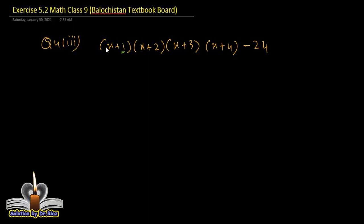مثلاً یہاں پر 1 ہے — اگر ہم 1 اور 2 ملائیں تو 1+2=3، اور 3+4=7، جو برابر نہیں۔ اگر 1 اور 3 ملائیں تو 1+3=4، اور 2+4=6، برابر نہیں۔ اب اگر 1 کے ساتھ 4 ملائیں تو 1+4=5، اور 2+3 بھی 5 — یہ برابر ہیں!